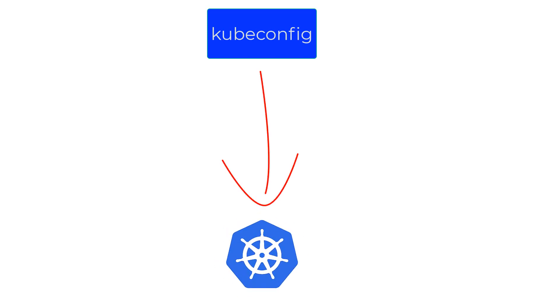Before we dig into Azure AD and AKS, let's first understand the role the kubeconfig file plays in a Kubernetes cluster. The kubeconfig file contains the information necessary to identify and configure access to a cluster.